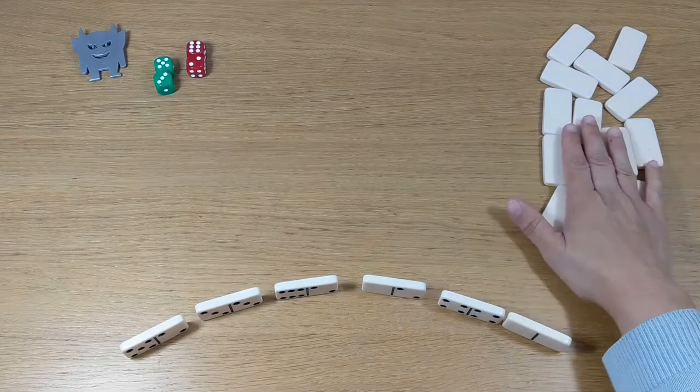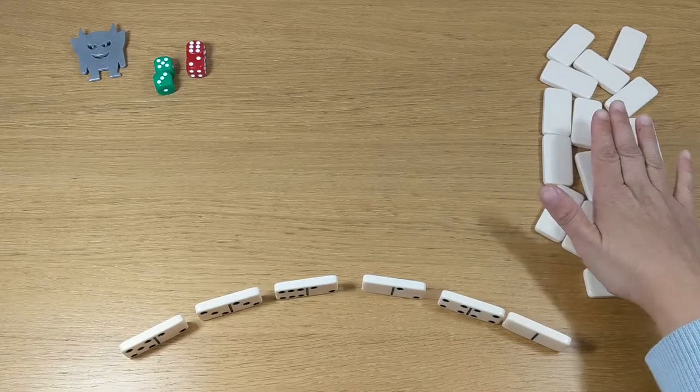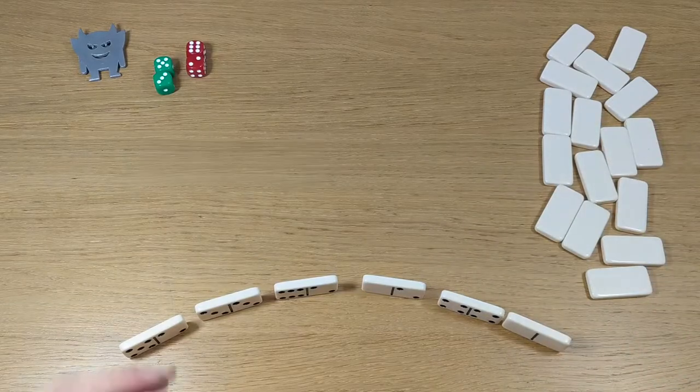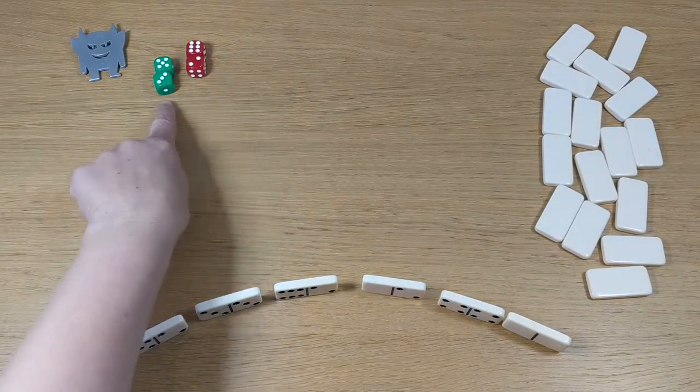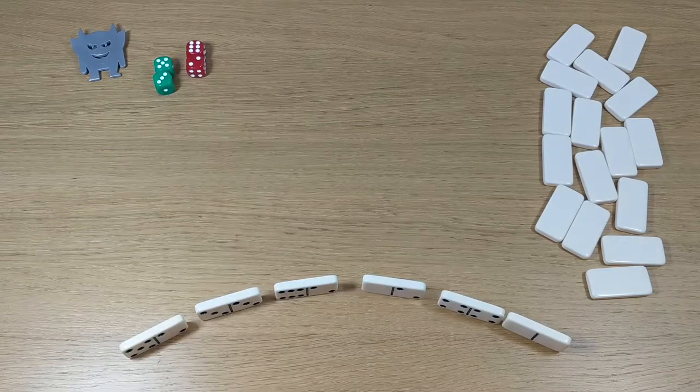To play flower and scorpion, you need one set of standard double six dominoes, four dice, two of each color. There can be any colors you want. I've got red and green. And you need a pen and paper for scoring.